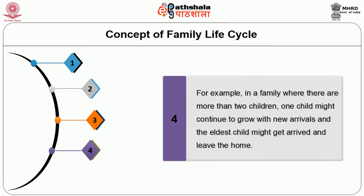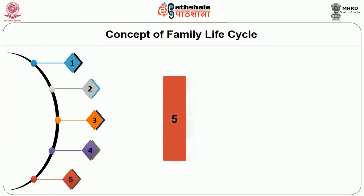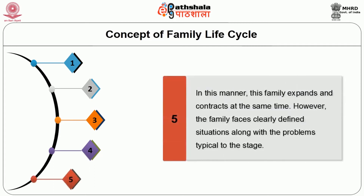For example, in a family where there are more than two children, one child might continue to grow with new arrivals while the eldest child might get married and leave the home. In this manner, the family expands and contracts at the same time. However, the family faces clearly defined situations along with the problems typical to each stage.